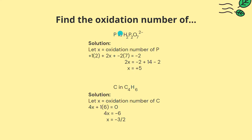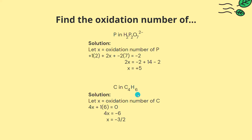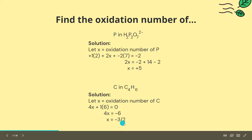Whenever there is more than one of the same ion in a species — for example, there are two hydrogen ions — we multiply its charge by how many ions there are. So hydrogen is 2, and we multiply plus 1, the charge of hydrogen, by 2. Now find the oxidation number of carbon in C2H6. If we let x equal the oxidation number of carbon, we find x equals negative 1.5.